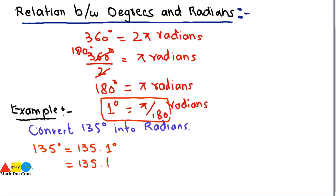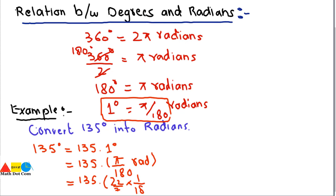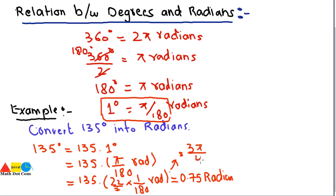So we get 135 × (π/180) radians. Substituting π = 22/7 and simplifying, we get approximately 0.75 radians. Alternatively, keeping π intact and simplifying 135/180, we get 3π/4 radians. These are the two forms you can use when converting degrees into radians.